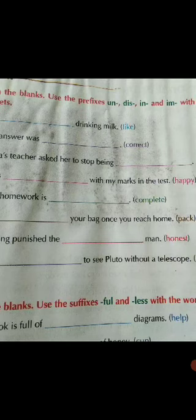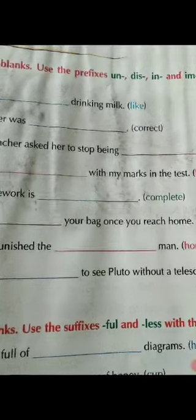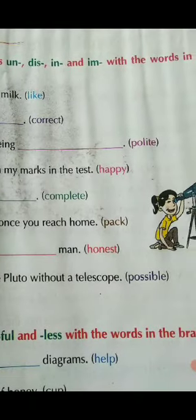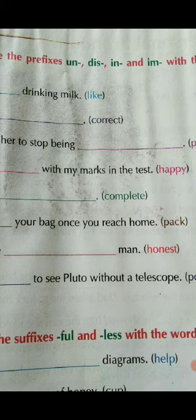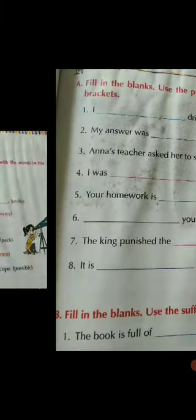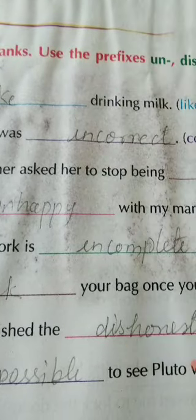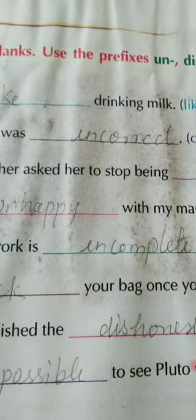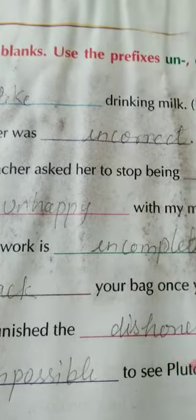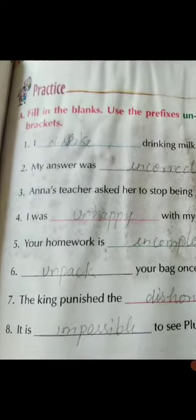The king punished the dishonest man — 'honest' becomes 'dishonest'. It is impossible to see Pluto without a telescope — 'possible' becomes 'impossible'. So the answers are: dislike, incorrect, impolite, unhappy, incomplete, unpacked, dishonest, and impossible. Students, today you have to do Exercise A as your homework. Thank you.